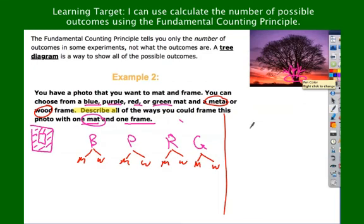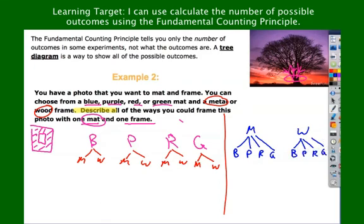I also did not have to start with the mat. I could have started with the frame. I could go metal or wood. And then I have four color options branching off of that. Blue, purple, red, green. Over here, blue, purple, red, green. So that's that.